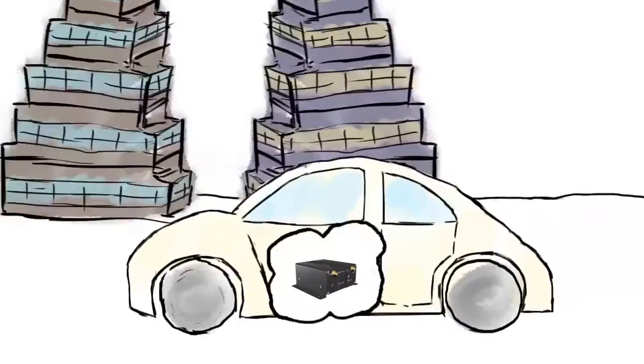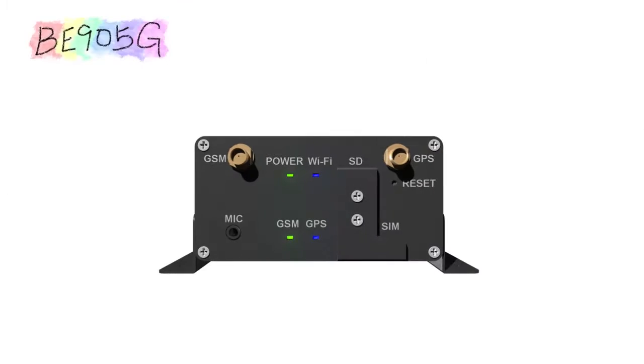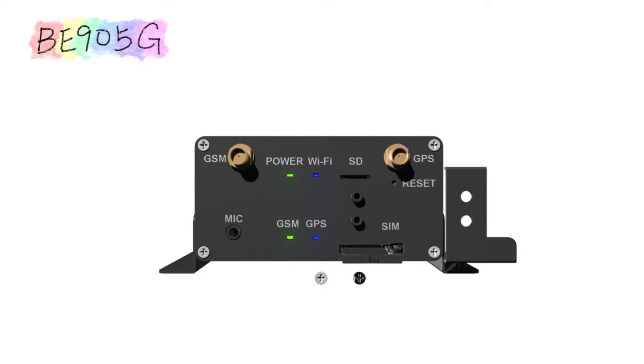BE905G has a 3G antenna, microphone, micro SD card slot, GPS external antenna, reset button, mini SIM card slot, and activity LED for power, Wi-Fi, 3G, and GPS.